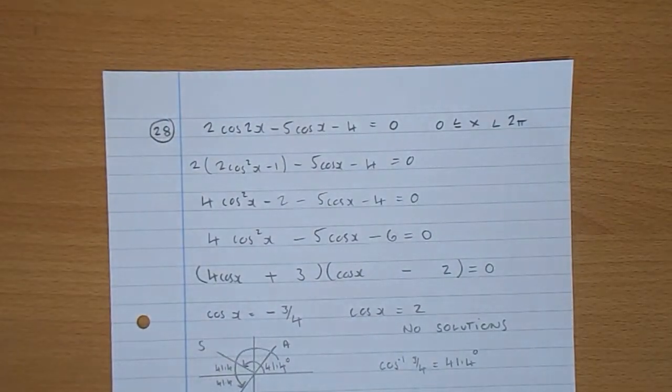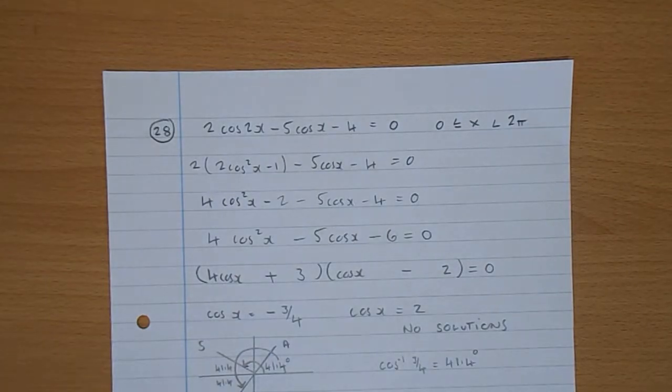Question 28, we're asked to solve 2cos2x take away 5cosx take 4 equals 0.